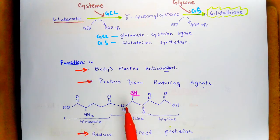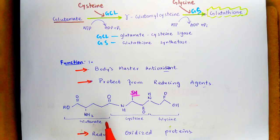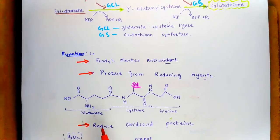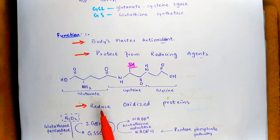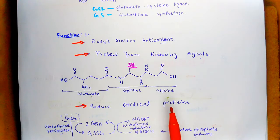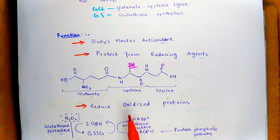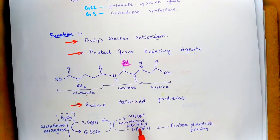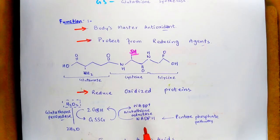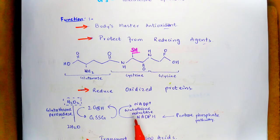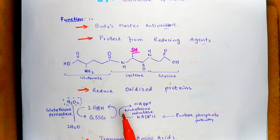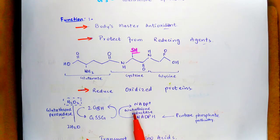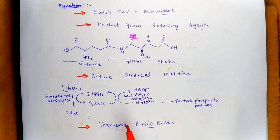The sulfhydryl group captures free radicals and toxins like mercury and other heavy metals. Glutathione is also involved in the reduction of oxidized proteins. It uses its sulfhydryl group to reduce oxidized proteins, resulting in the oxidation of two molecules of glutathione to form glutathione disulfide, which is reduced back to glutathione through the action of glutathione reductase.